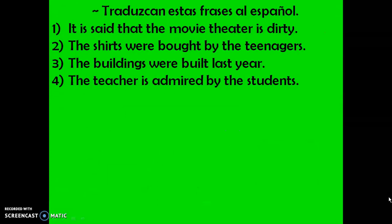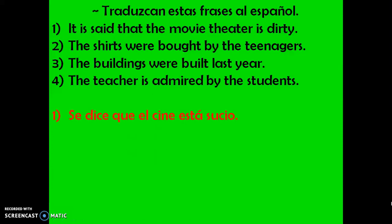Now let's practice. Pause the video and either write these out or say them out loud. I'll take you through the process to figure out which formula to use. Number one says: It is said the movie theater is dirty. First question to ask yourself — do we know by whom? We do not. So we want formula number one, the simple passive voice. The correct answer is: Se dice que el cine está sucio. We use se dice because it's third singular with se, because we do not know by whom.